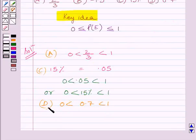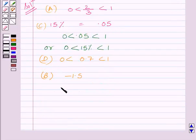Now, let us consider B part. We are given minus 1.5. Now, clearly we can see this value is less than 0.